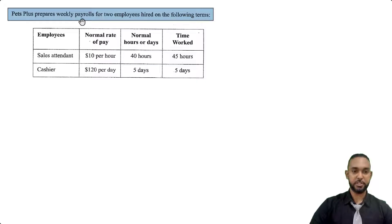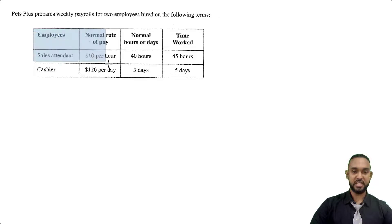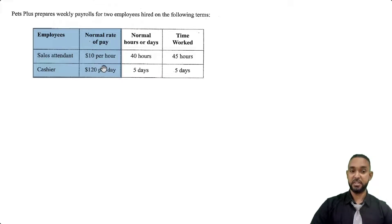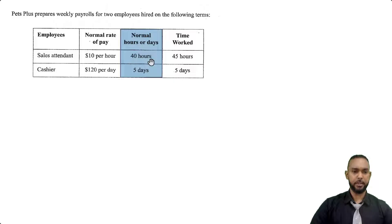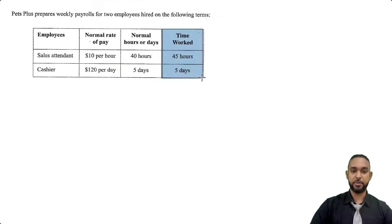So it reads that Pets Plus prepares weekly payrolls for two employees hired on the following terms. We have a table showing some information. Employees are a sales attendant and a cashier. Normal rate of pay is $10 per hour for the sales attendant and $120 per day for the cashier. Normal hours or days: 40 hours for the sales attendant — that's per week, five days at eight hours — and five days for the cashier. Actual time worked was 45 hours for the sales attendant and five days for the cashier.